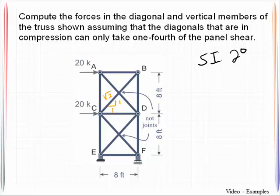But what we are being asked to do for this approximate analysis is assume that the diagonals that are in compression can only take one-fourth of the panel shear.